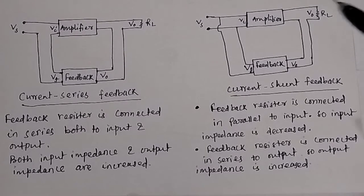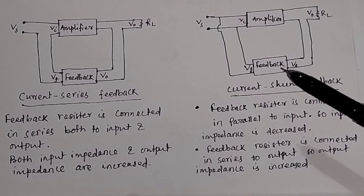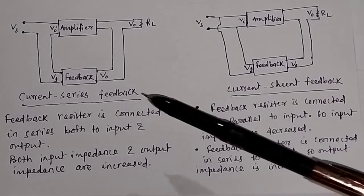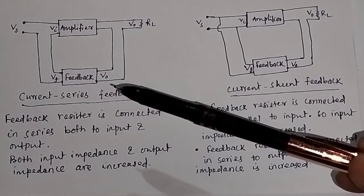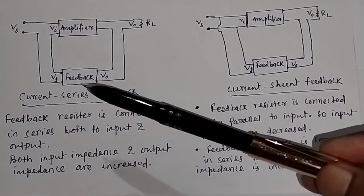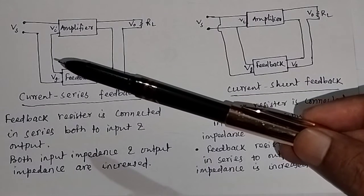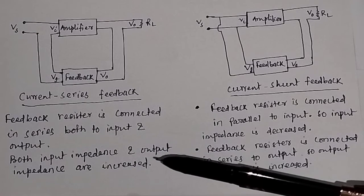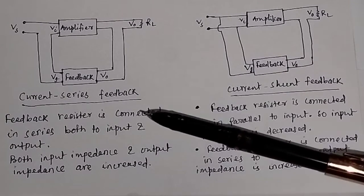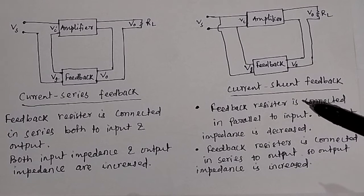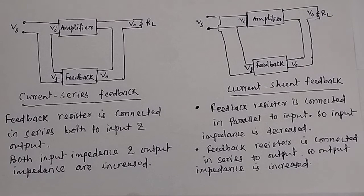In exam questions you will be asked in which case impedance will be more and in which case it will be less. Looking at the diagram: when the resistor is connected in series, the input has more resistance after feedback. In current series feedback, both input impedance and output impedance will be increased. So in all four cases — voltage series, voltage shunt, current series, and current shunt feedback — you can easily find out whether input impedance and output impedance will increase or decrease.